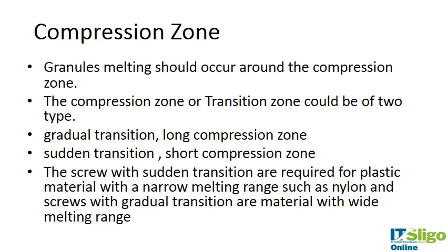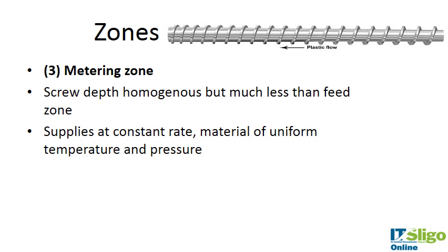As the material goes from the feed zone to the melt zone, there is an increase in the screw root diameter, resulting in a decrease in the volume of space enclosed by the thread. Granule melting occurs around the compression zone. The compression zone — sometimes called the transition zone — can be of two types: a gradual transition with a long compression zone for plastics with a high melting range, or a sudden transition with a very short compression zone for plastics with a narrow melting range, such as nylon. The metering zone is the last zone, where screw depth is homogeneous but less than the feed zone.